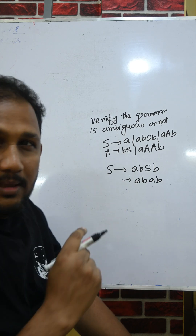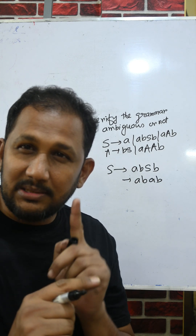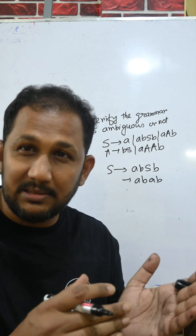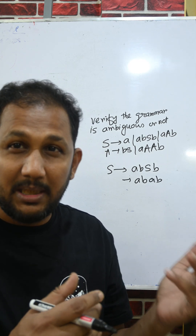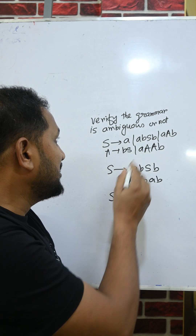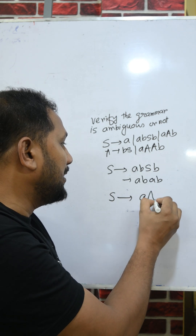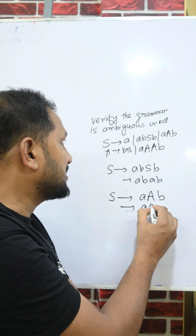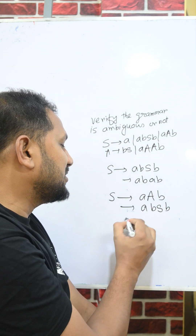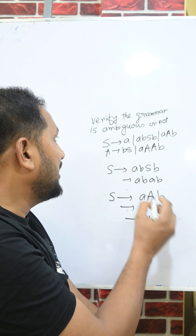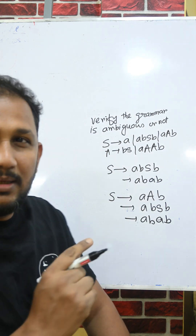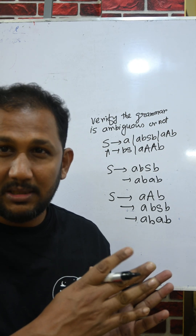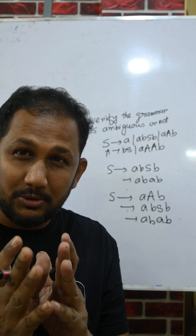So one derivation gives us abab. Now let us consider another derivation to create abab. Using S → aAbA, and from A → bS, and S → a, we also get abab. So for the same string abab there are two different derivations.